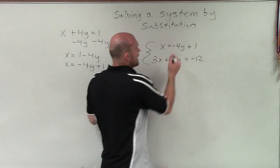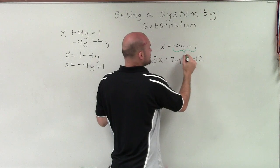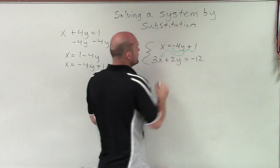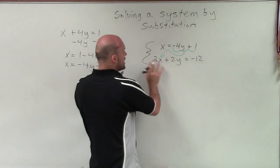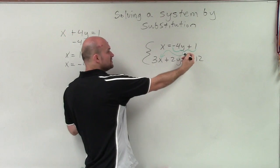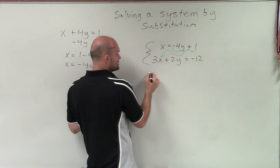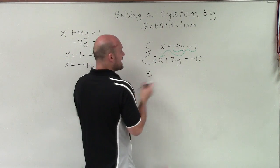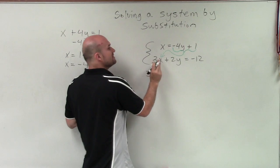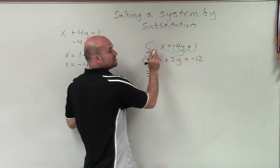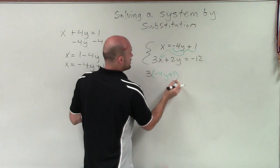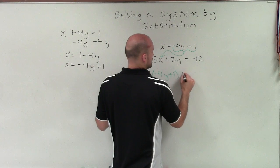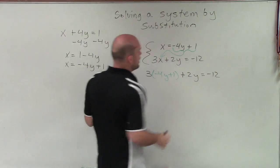So when applying substitution, I can apply this value in for x into our other variable in the other equation. So now if I rewrite this by substituting in the value of x for the variable in the other equation, it's going to be 3 times not just x, but now the value of x, which we achieve from our other equation, which is negative 4y plus 1 plus 2y equals negative 12.